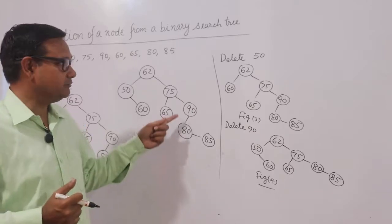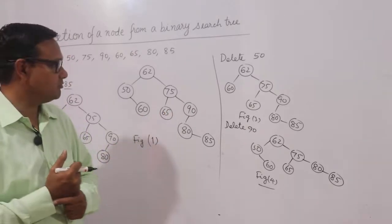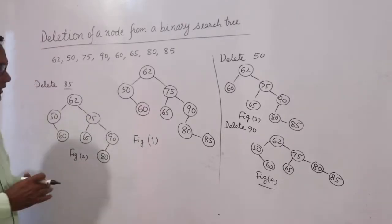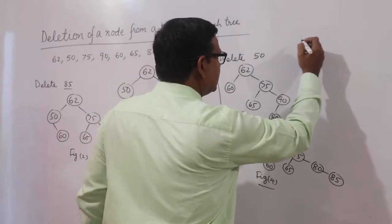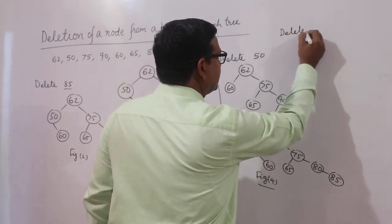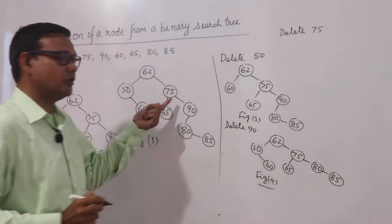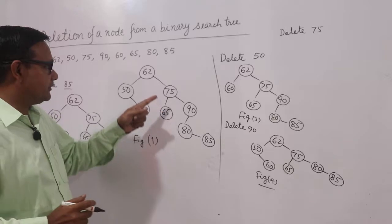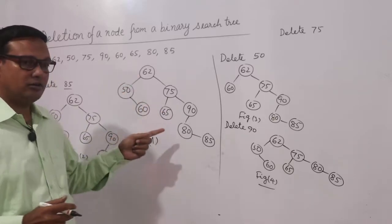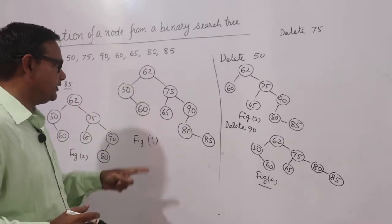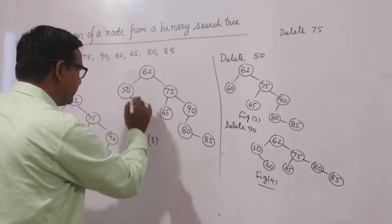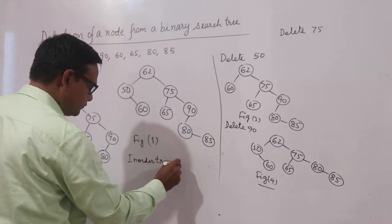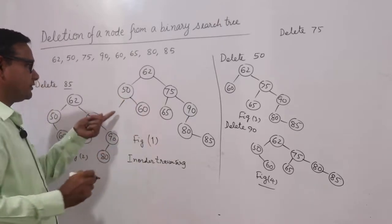Now if I have to delete a node having two children — for example, 75 — then what should be done? Delete 75. If I take its in-order traversal of Figure 1 and do the in-order traversal, I will consider its dummy children.